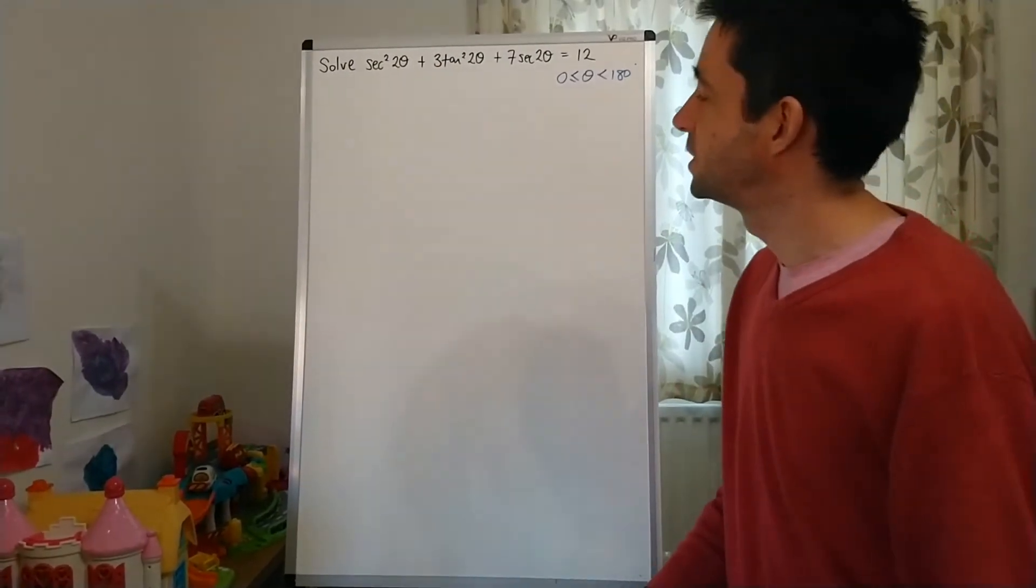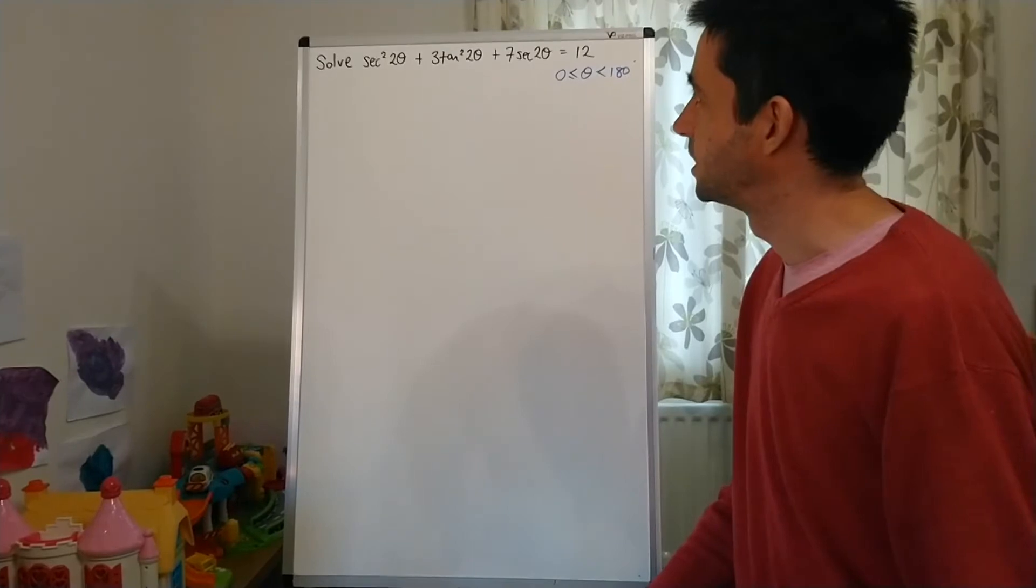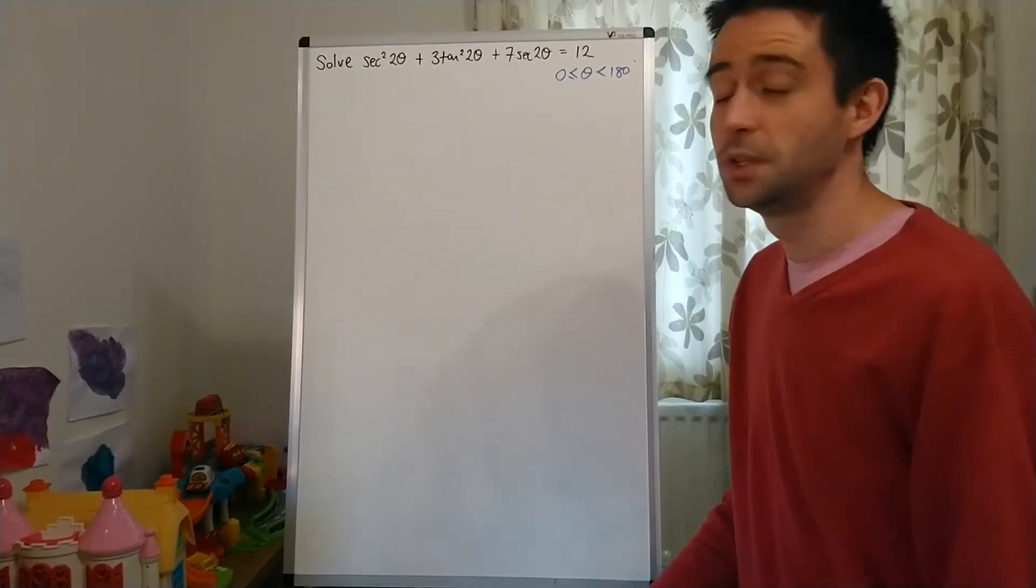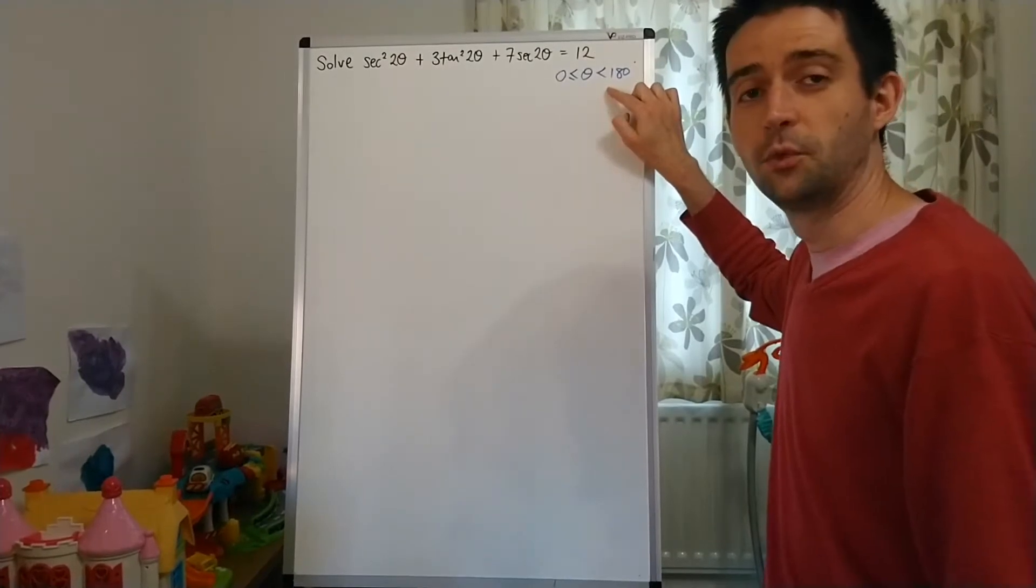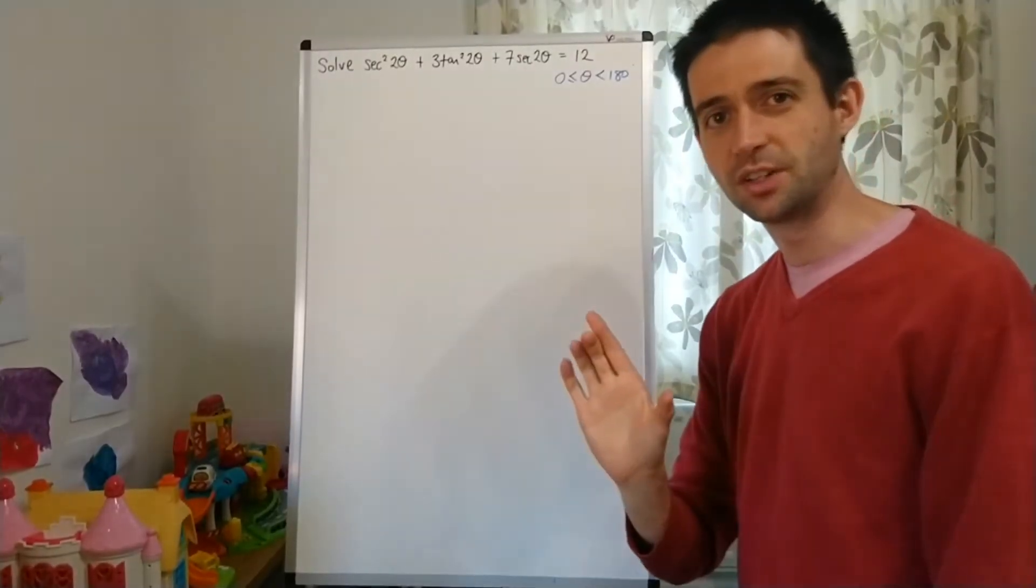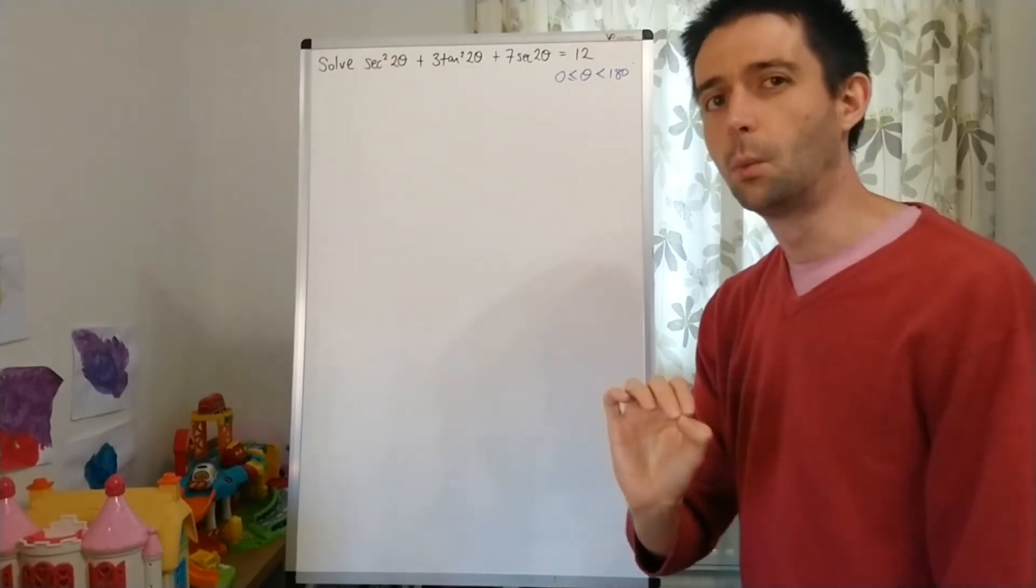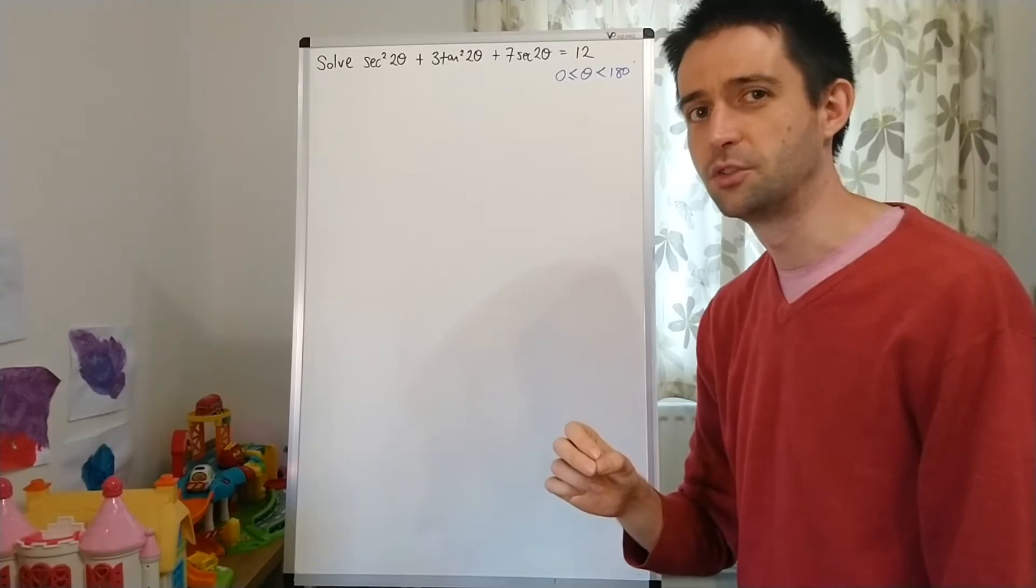So here we have solve sec²2θ + 3tan²2θ + 7sec2θ = 12. And we're going to be doing that in degrees from 0 to 180 degrees. And you might just like to have a look at the question and think, why is the range 0 to 180, not 0 to 360?